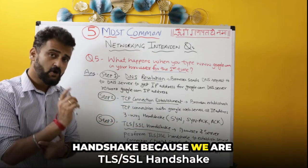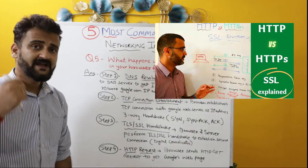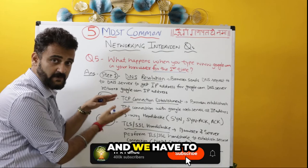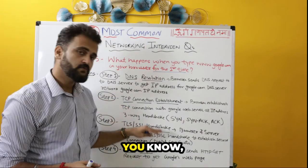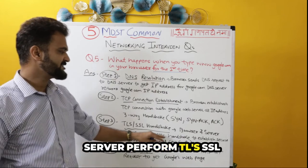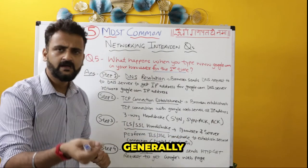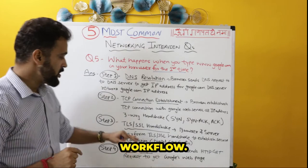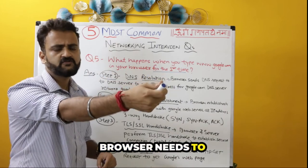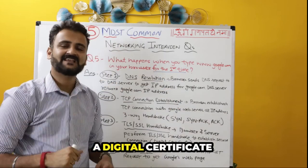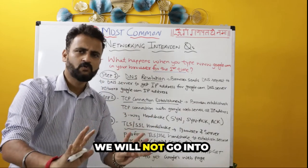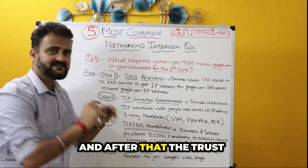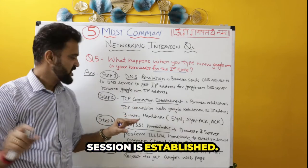Step three is the TLS/SSL handshake. Because we are typing HTTPS, it is a secured website — TLS/SSL, secure socket layer. We have to establish trust with the Google web server. In this handshake, the browser and server perform a TLS/SSL handshake to establish a secure connection. The browser needs to verify that the web server is legitimate, so the web server sends a digital certificate signed by a certificate authority. After this handshake, trust is established and a secure session is set up.